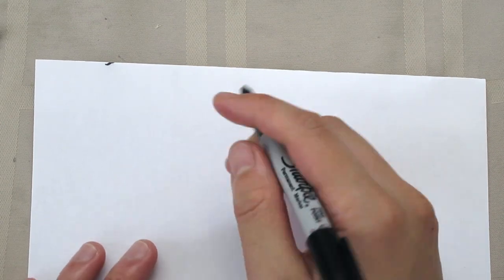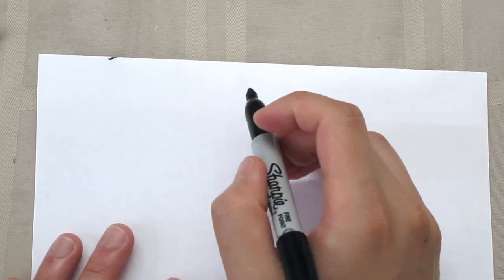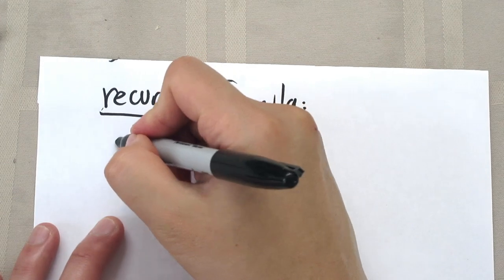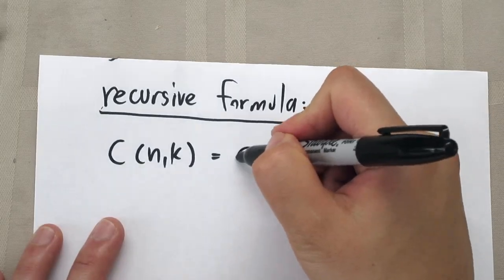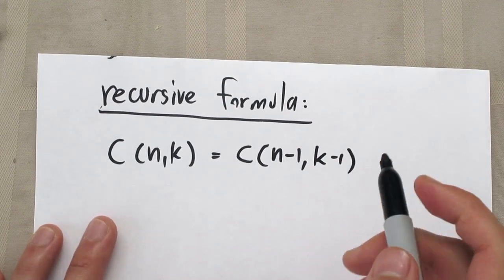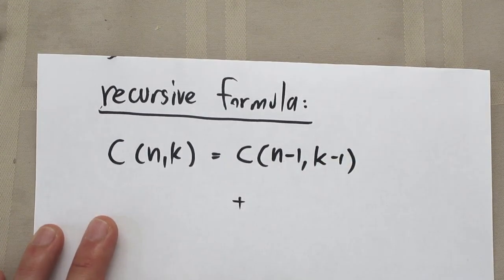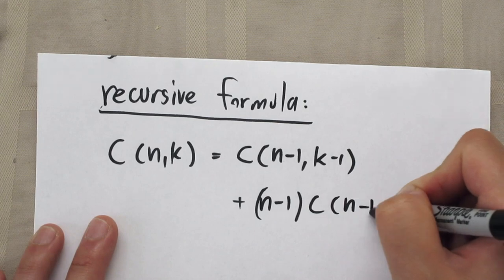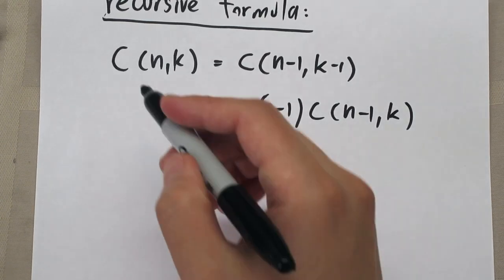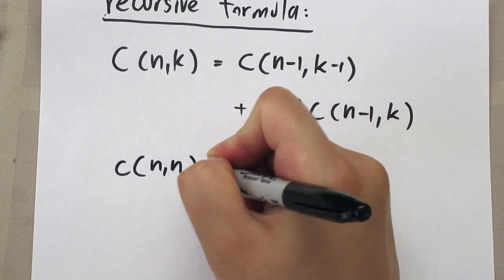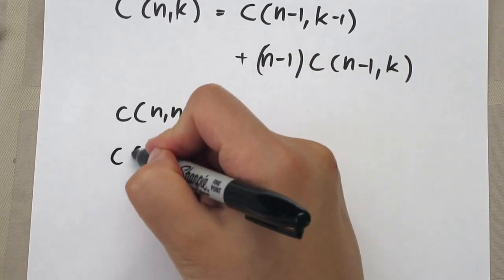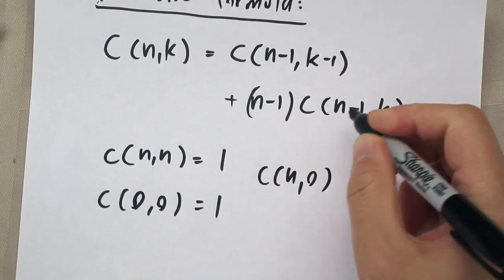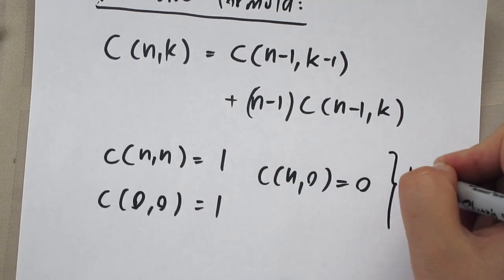The recursive formula for the signless Stirling number of the first kind is: c(n,k) = c(n−1, k−1) + (n−1)·c(n−1, k). The base cases are: c(n,n) = 1, c(0,0) = 1, and c(n,0) = 0 for all n≥1.